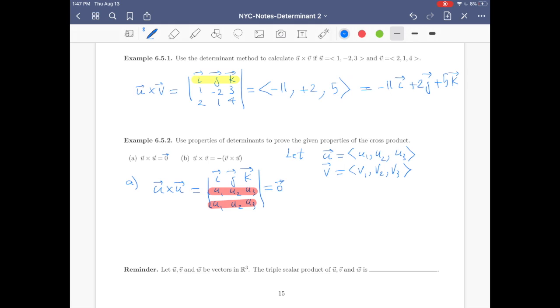Good, now part b. Let's evaluate u cross v. Then you put i first row, j and k, u1 u2 u3, v1 v2 v3. By properties of determinant, if we switch the second and third row, then we get minus times i j k, v1 v2 v3.